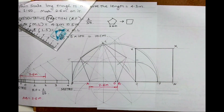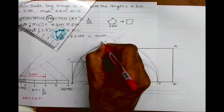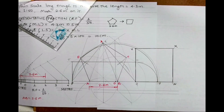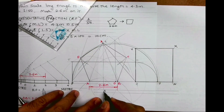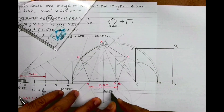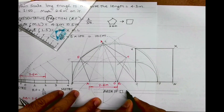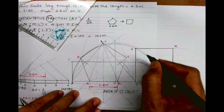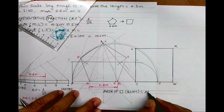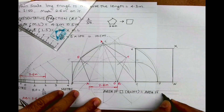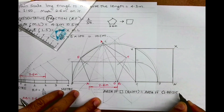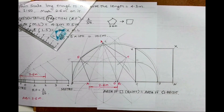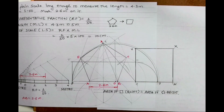So we have converted pentagon ABCDE into a square QWXV of equal area. When you write it, write: area of square QWXV is equal to area of pentagon ABCDE. I hope you have understood this problem. This is very useful from the ICSE technical drawing point of view, as well as for anyone doing plain scale problems.